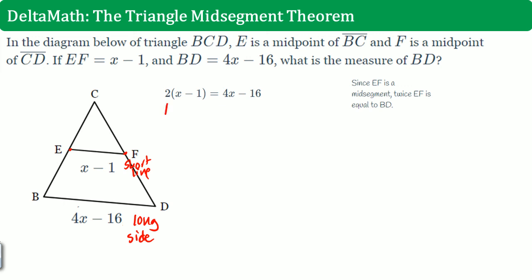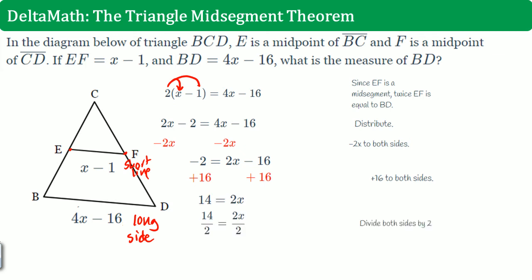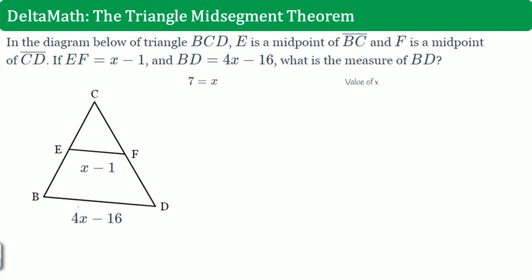So two times the short equals the long. Then we did some math. Distribute. So two times X is 2X. Two times negative one is negative two. And everything else remains the same. Subtract 2X to both sides. You get negative two comes down. 4X minus 2X becomes 2X. Bring down the negative 16. Add 16 to both sides. Then you get 14 equals to 2X. You have to divide by two to both sides. Then you get X equals to seven.